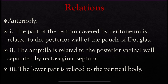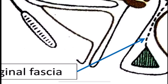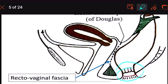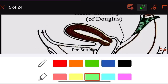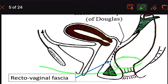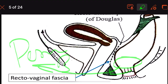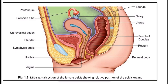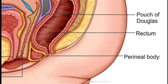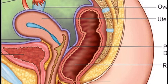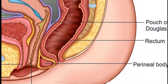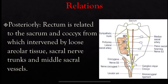The lower part of the rectum is related to the perineal body. So the anterior relations of the rectum are: the posterior wall of the pouch of Douglas, the posterior vaginal wall separated by the rectovaginal fascia, and the perineal body related to the lower part of the rectum.